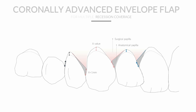The second premolar is subject of discussion, since no recession can be seen on this tooth. Zucchelli has described what he calls a false recession technique to overcome this problem. This consists of a paramarginal incision mimicking a recession defect. This false recession is then treated as a real recession and connected to the margin of the molar and premolar.